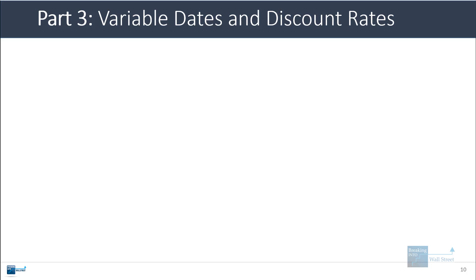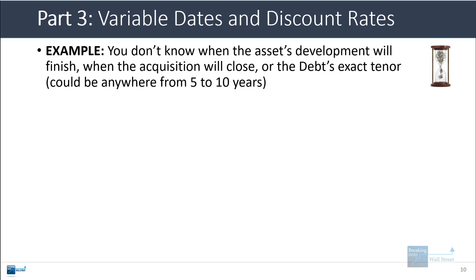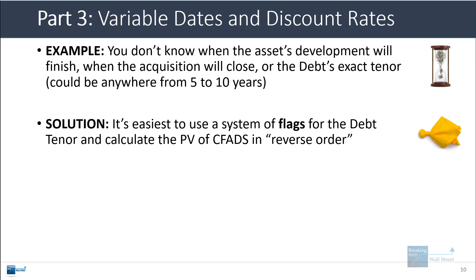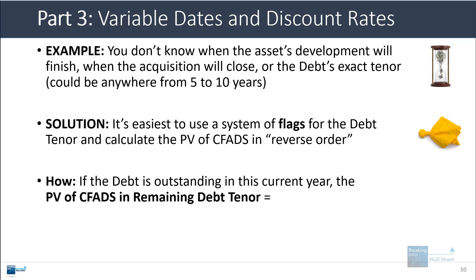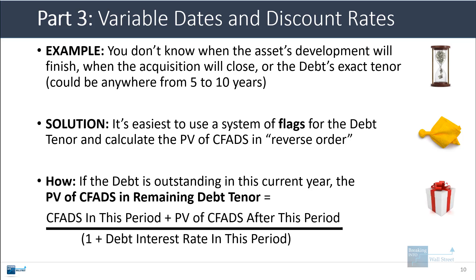One question we get a lot is what to do if you have variable dates or discount rates that change in a model. Maybe you don't know exactly when the asset's development will finish, or when a planned acquisition will close, or you don't know exactly how long the debt will last — it could be five, ten, or fifteen years. The usual solution is to use a system of flags that keep track of when the debt is outstanding and then calculate the present value of CFADS in reverse order, saying that if the debt is outstanding in the current year, the present value equals the CFADS in this period plus the present value of everything after it, divided by one plus the debt interest rate in this period.